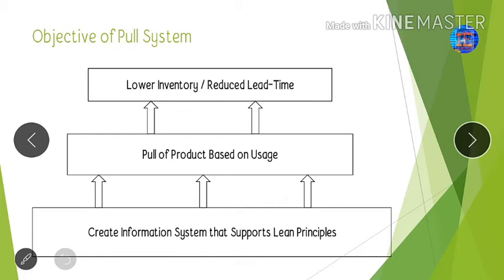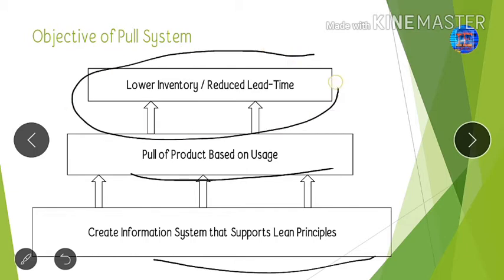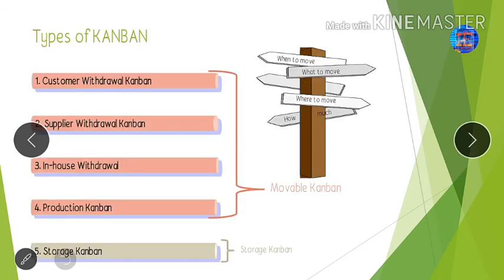The objective of the pull system: as we already know, it supports the lean production system and is based on sales results. But the main objective of the pull system is to lower inventory and reduce lead time waste.